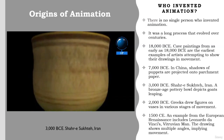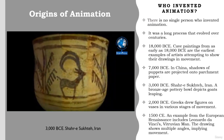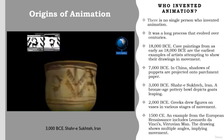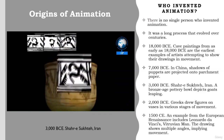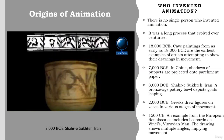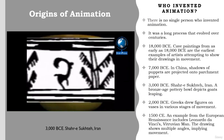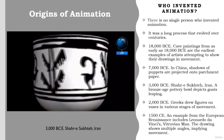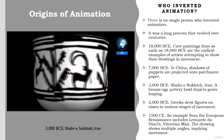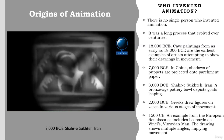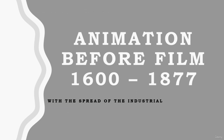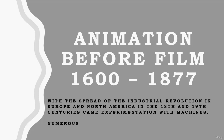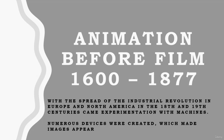Some notable examples from ancient times include 7,000 BCE in China, where shadows of puppets are projected onto parchment paper, developed into an art form in eastern countries, particularly India. 3000 BCE, the Shari Soukta, a Bronze Age pottery bowl, depicts goats leaping — these sequential images could have possibly been designed to be spun, making the goats appear to jump. 2000 BCE, Greeks drew figures on vases in various stages of movement. An example from the European Renaissance includes 1500 CE: Leonardo da Vinci's Vitruvian Man drawing, which shows multiple angles amplifying movement.